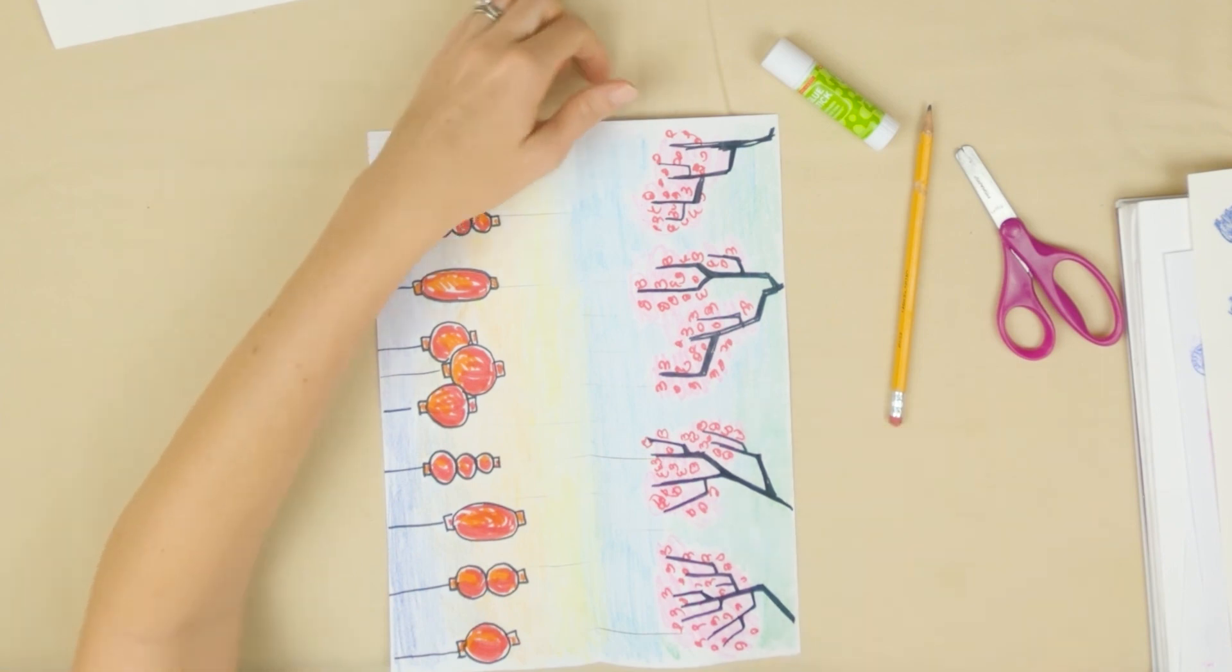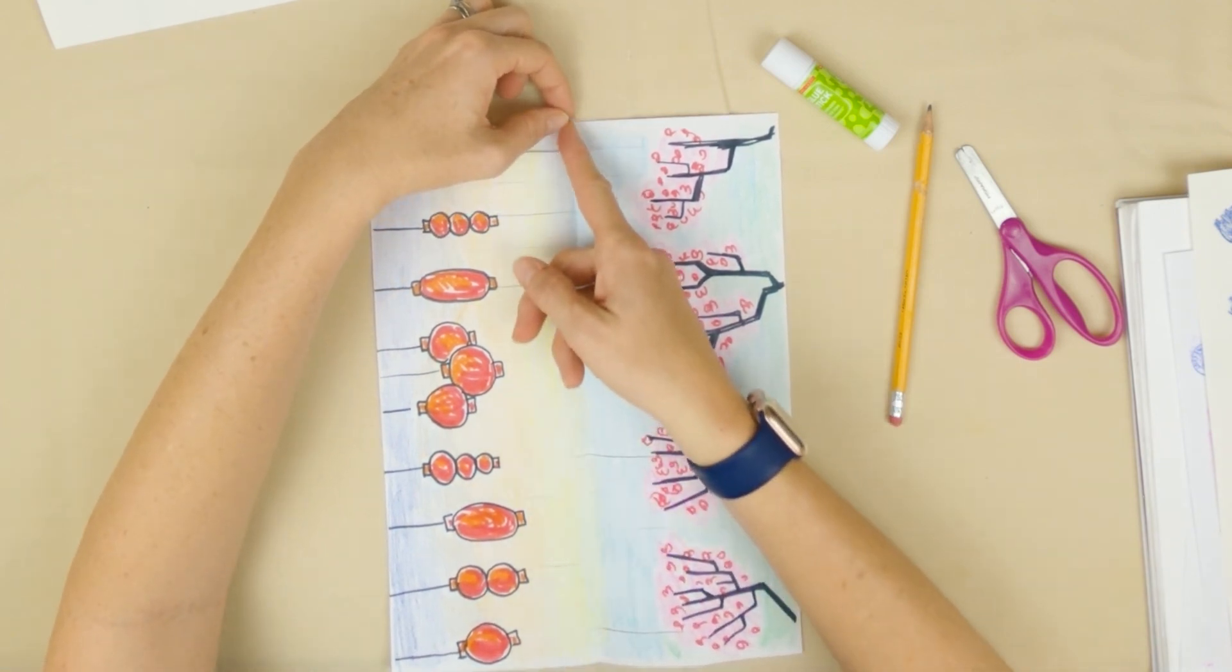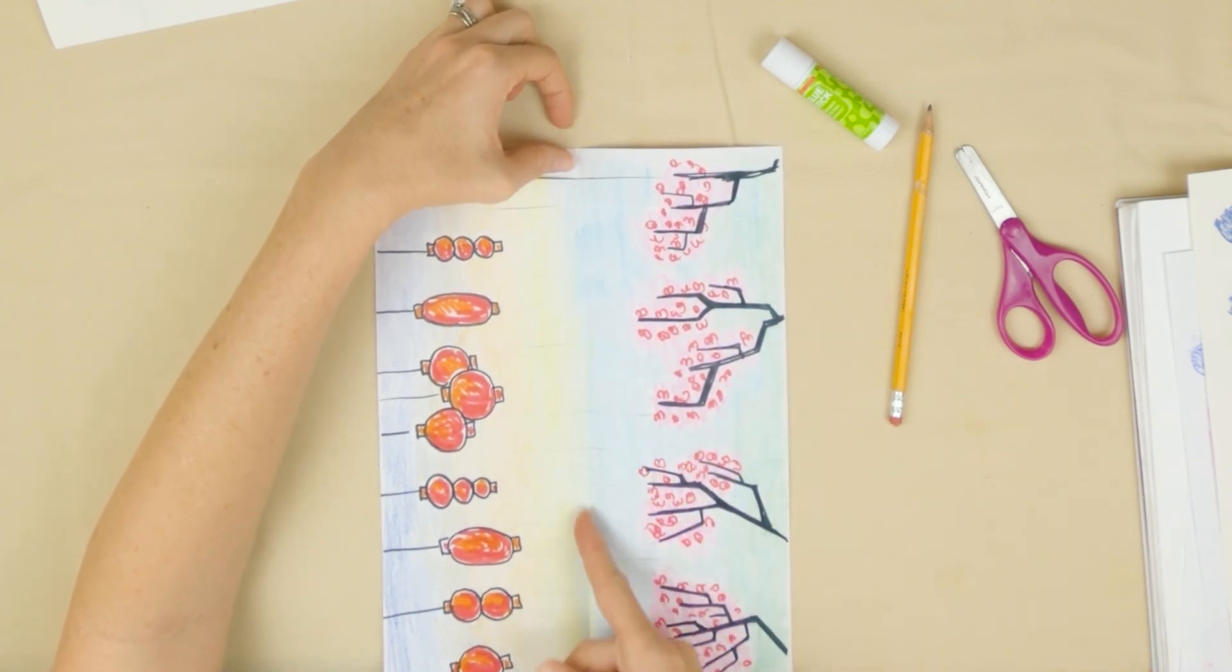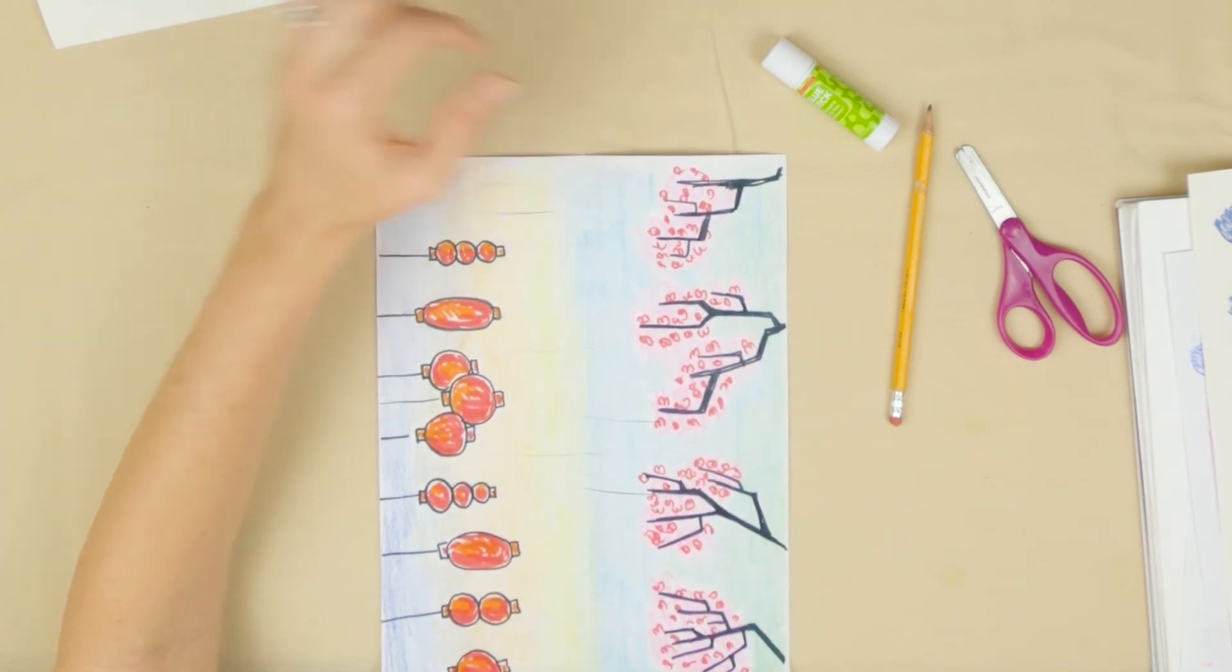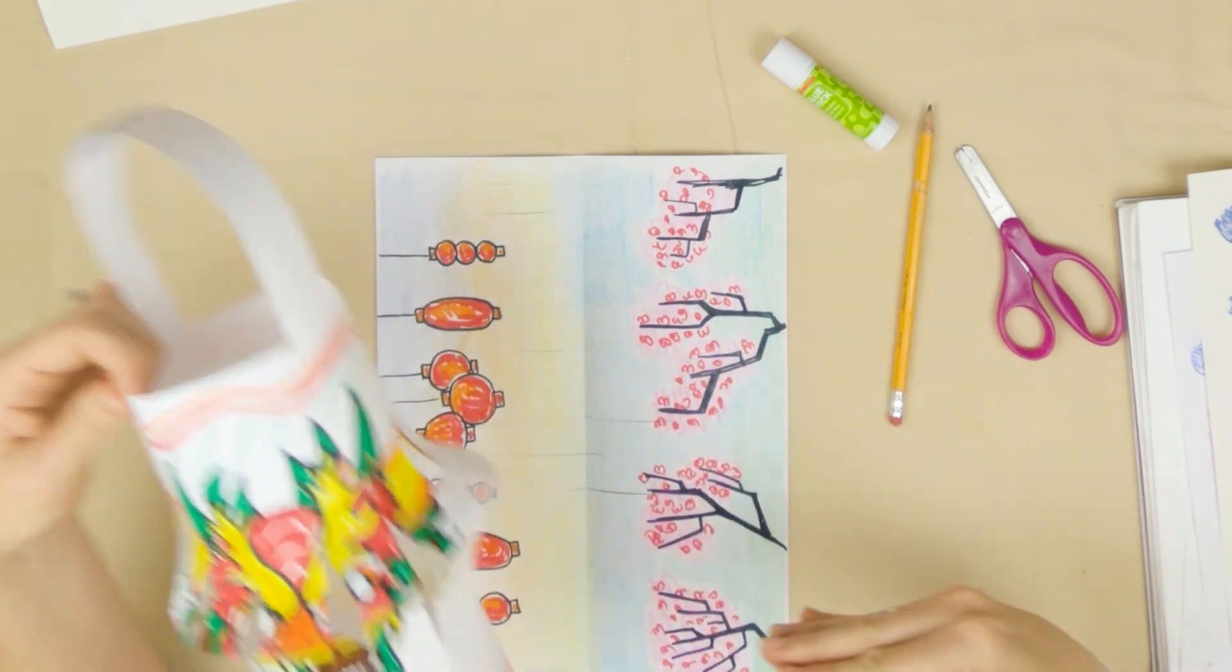The next step is just refolding on that same folded line. We're just going to fold it but we're going to fold it back the other way, because we want the lantern to stick out, we don't want it to go in.